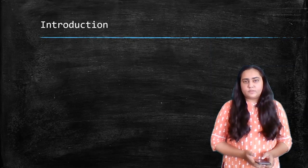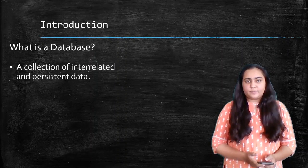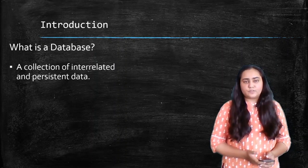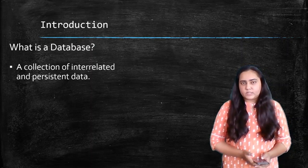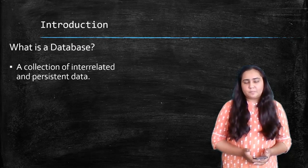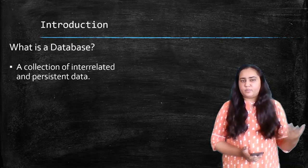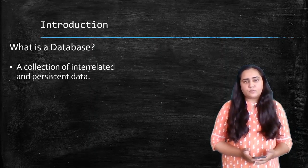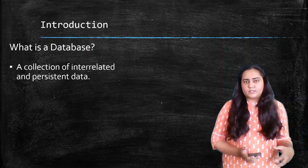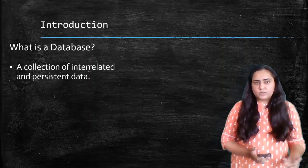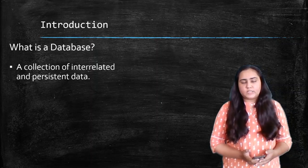First I would like to begin with the definition of DBMS and for that we need to first define what a database is. A database is a collection of interrelated and persistent data. The word interrelated means data that is related with each other. A database consists of a number of tables with columns and rows, and these tables are actually related with each other — that is what makes a database.